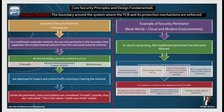The security perimeter is the boundary around the system where the TCB and its protection mechanisms are enforced. In a traditional corporate network, the security perimeter is the boundary that separates the trusted internal network from the untrusted external internet. At this boundary, security controls such as firewalls, IDS, IPS and web proxies are deployed to inspect and control traffic entering or leaving the network. Inside the perimeter, users and systems are considered trusted; outside, they are untrusted. This is the classic castle-and-moat model.